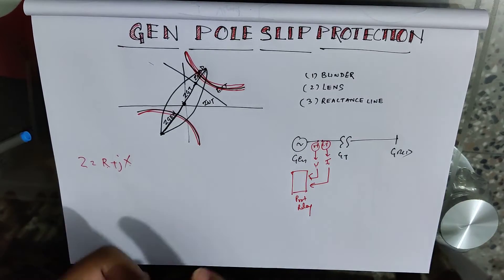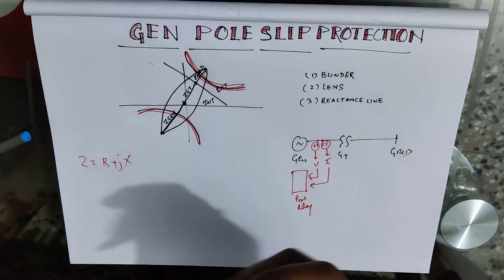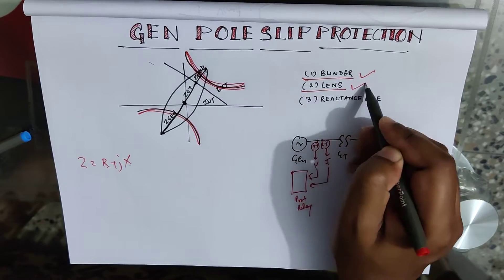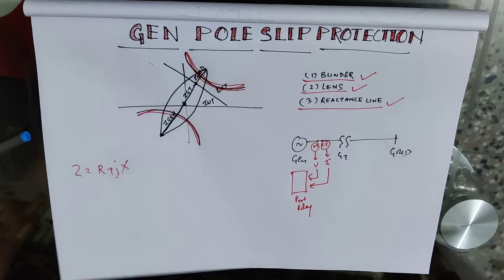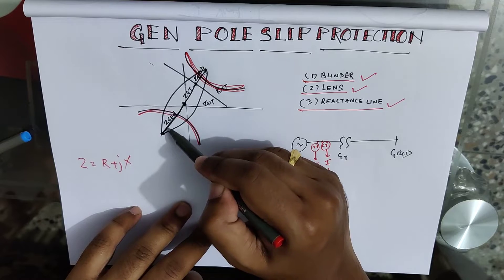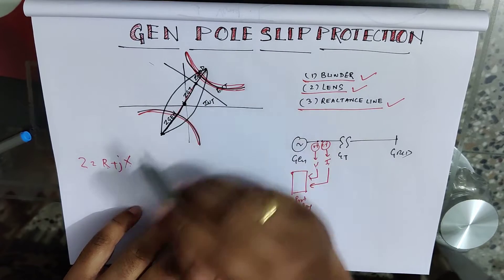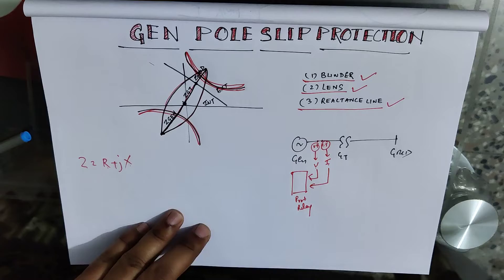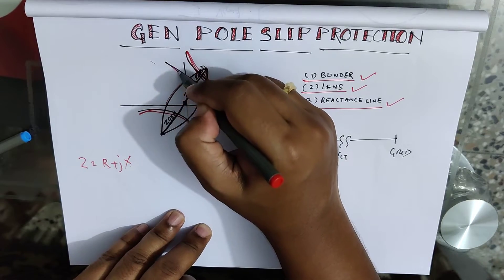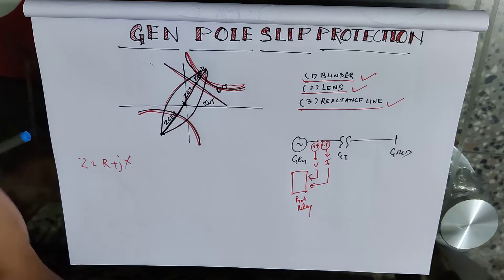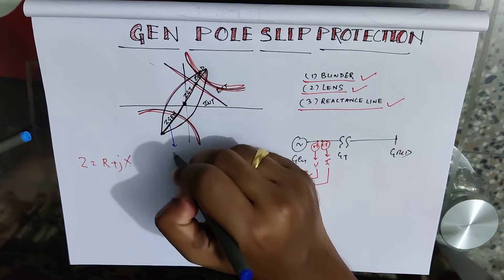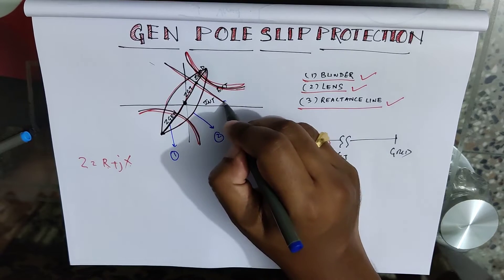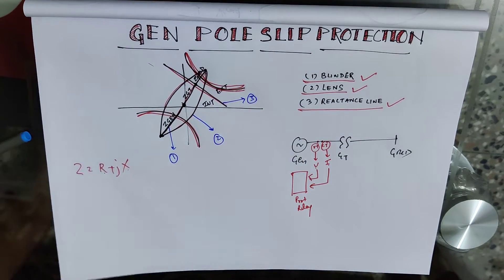The locus of pole slip protection has three parts: number one is the blinder, number two is the lens, and number three is the reactance line. The blinder part, the lens — you can easily recognize — and the reactance line are the three components of this characteristic.